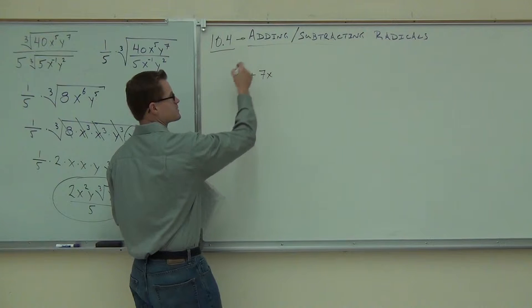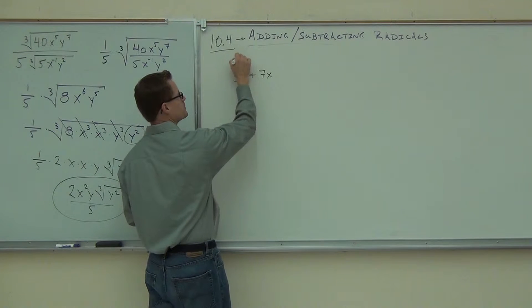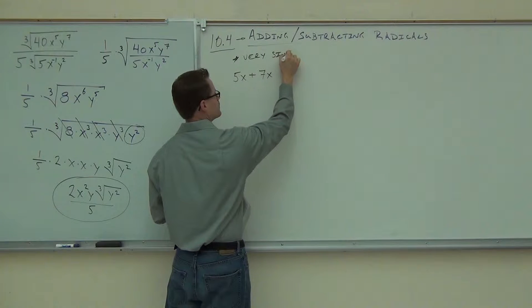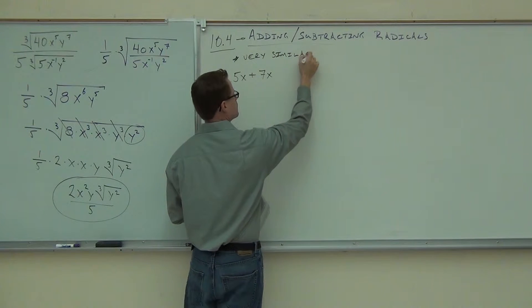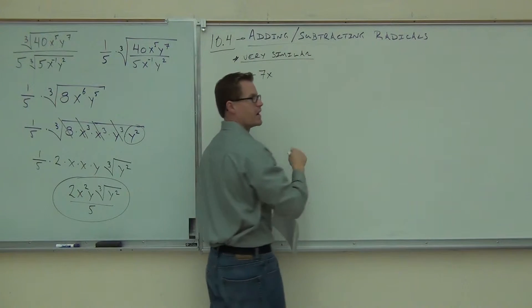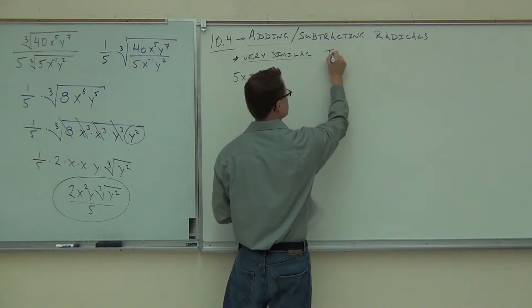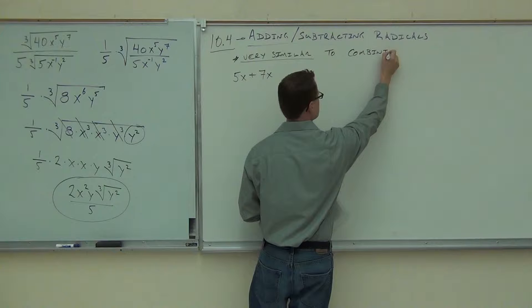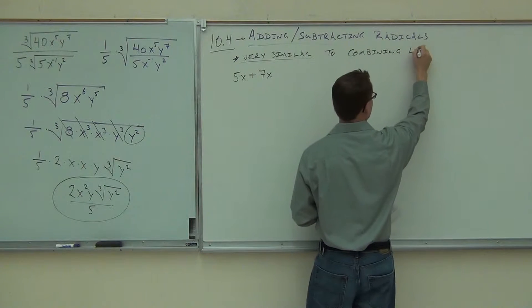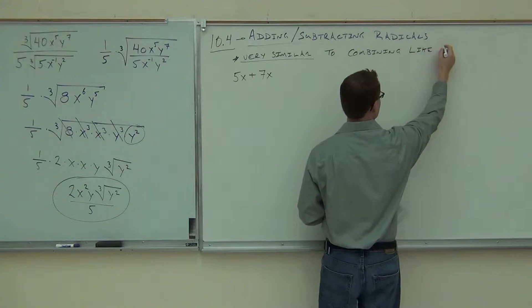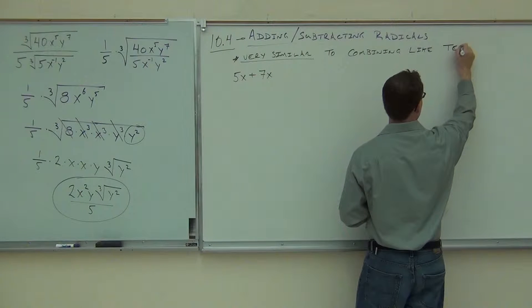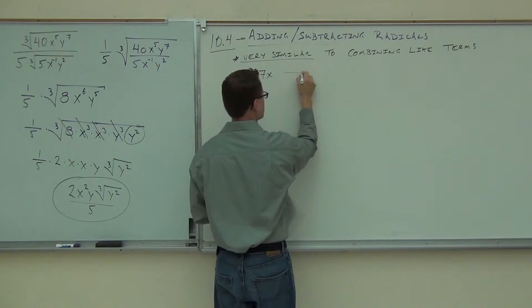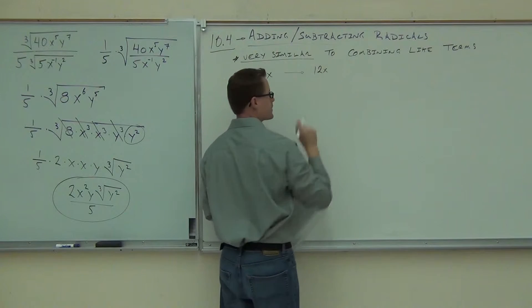Because what we're doing — adding and subtracting radicals — is very similar to combining like terms. That right there would give us 12x.